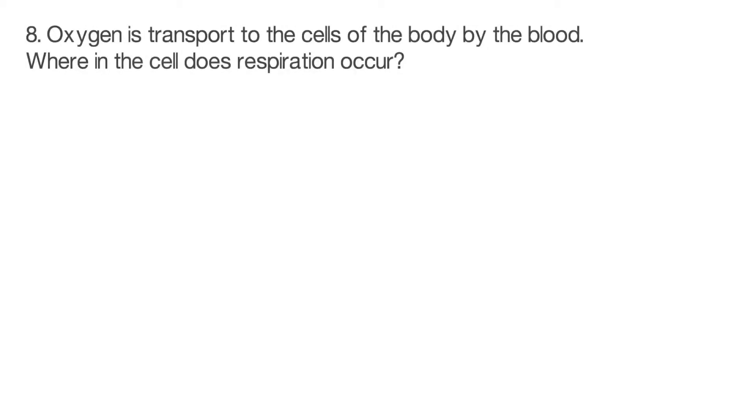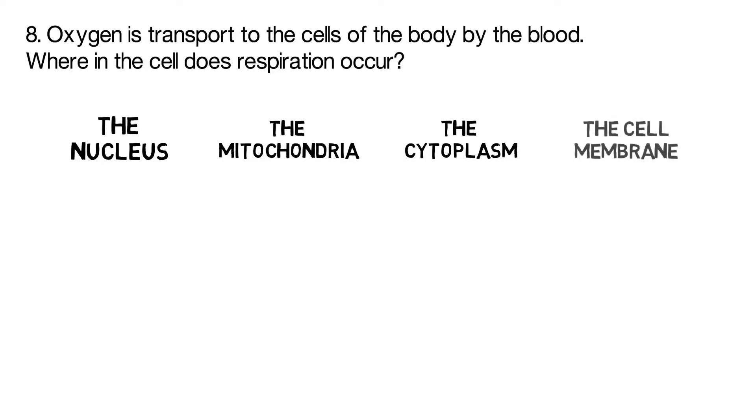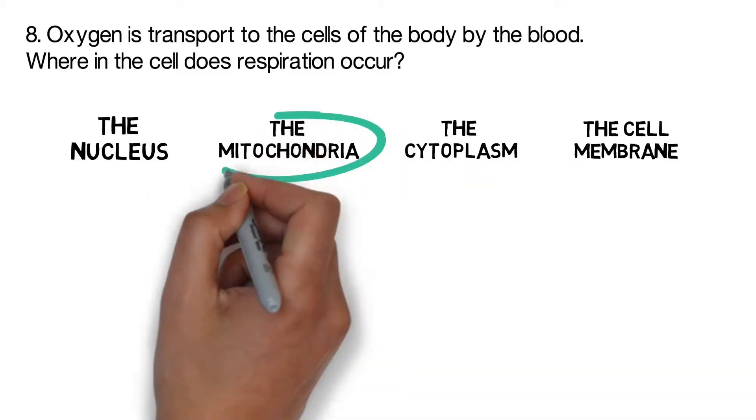Question eight: oxygen is transported to the cells of the body by the blood. Where in the cell does respiration occur? Is it the nucleus, is it the mitochondria, is it the cytoplasm, or is it the cell membrane? The correct answer is the mitochondria.